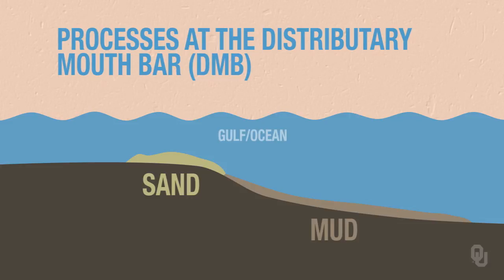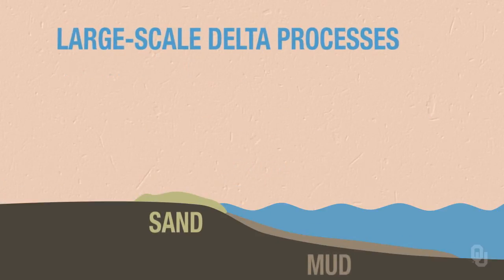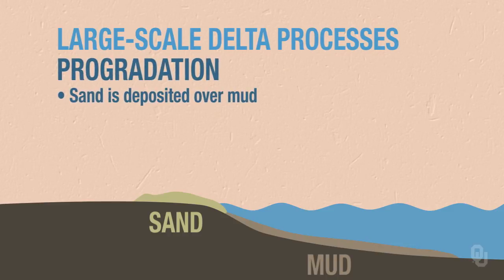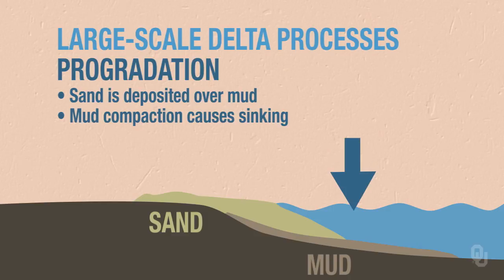And that mud has a lot of water in it. There are some large-scale delta processes that are very important. One of the first is progradation, or the adding of land. As more and more sand is deposited, it moves out into the ocean, and eventually it will be deposited over mud. So you get sand deposition on top of mud. Now, remember that mud has a lot of water in it. You put something heavy on top of the mud and it's going to cause compaction, and that will cause sinking.